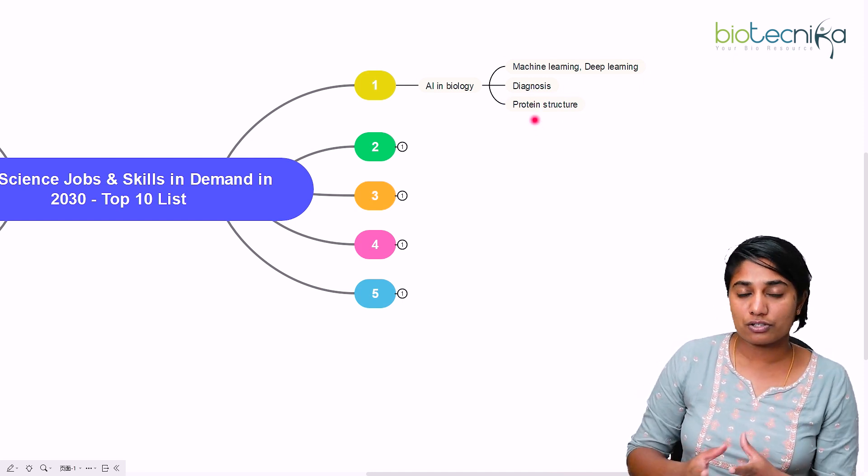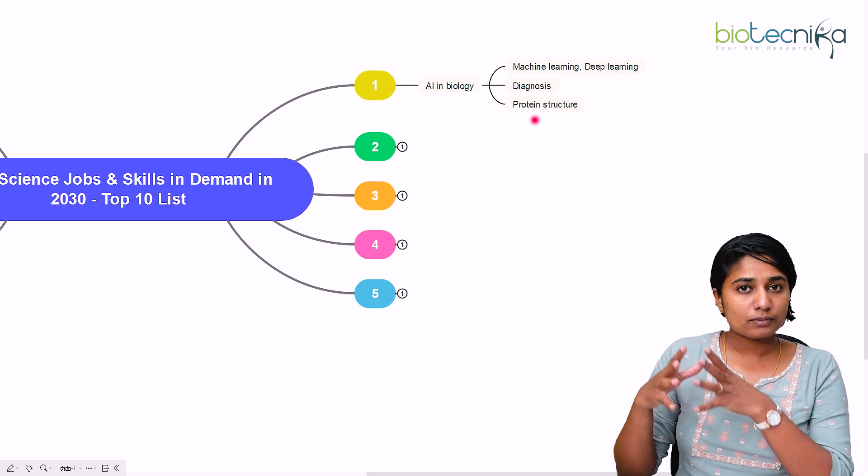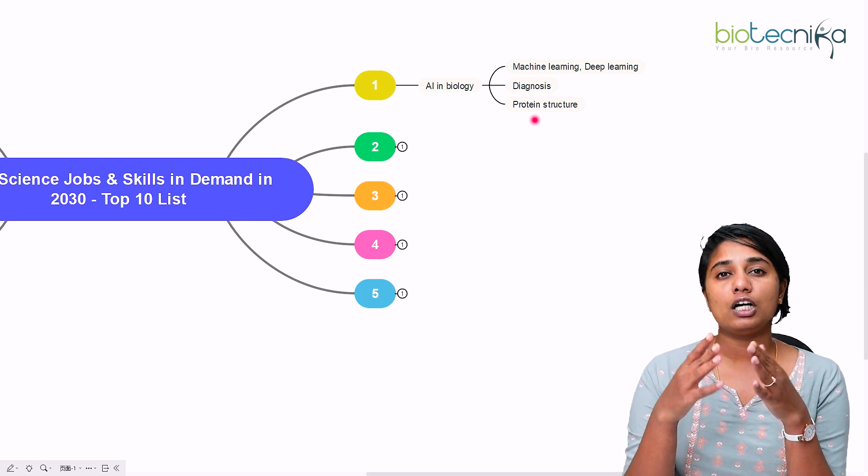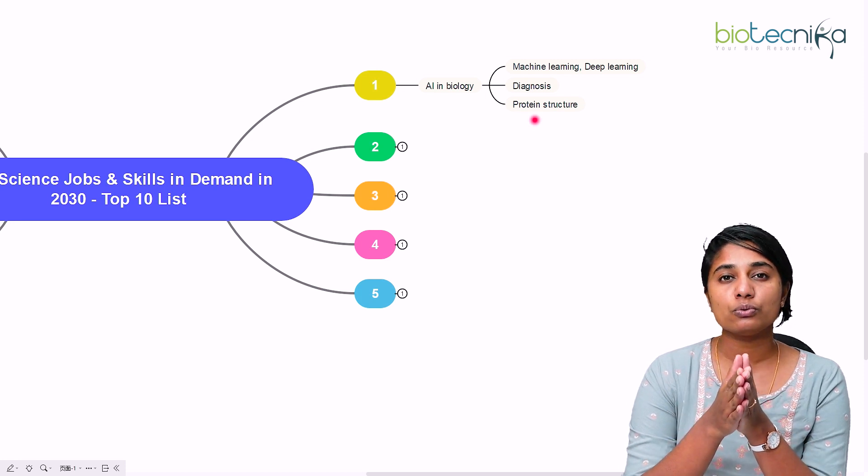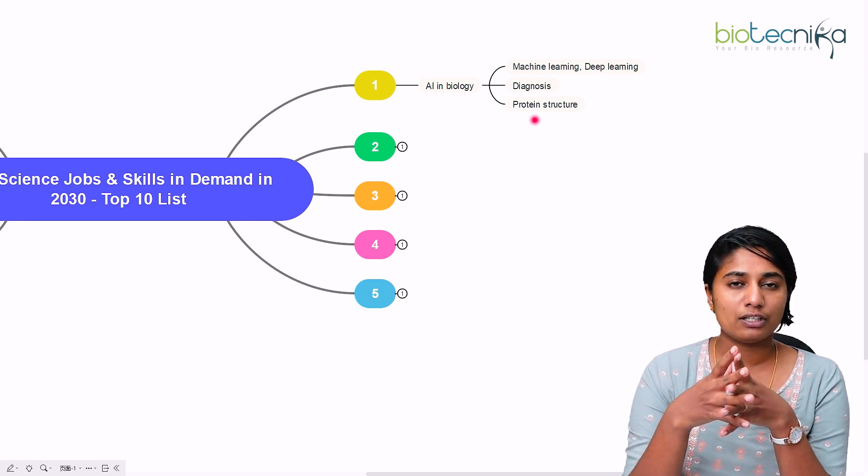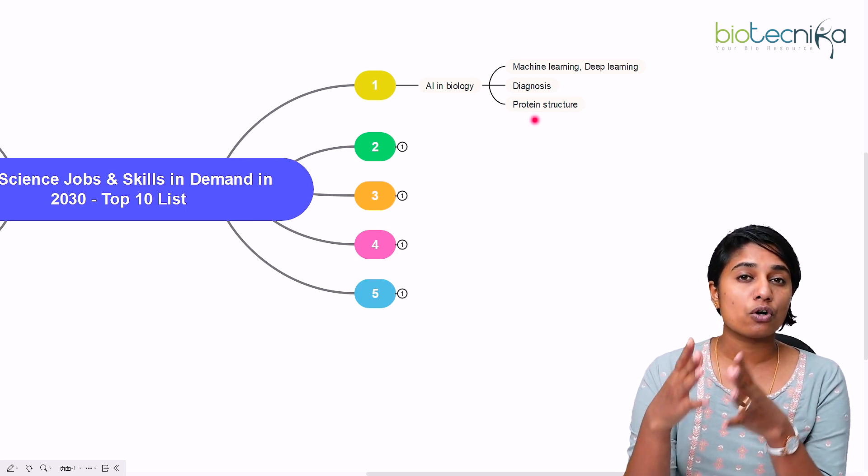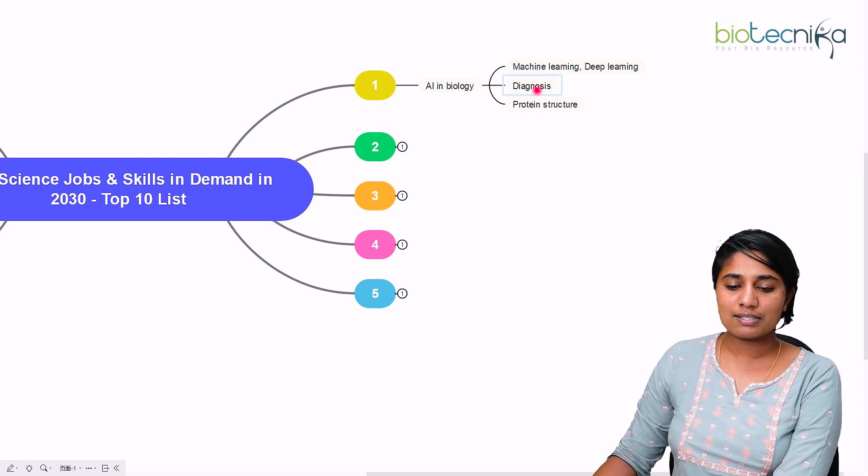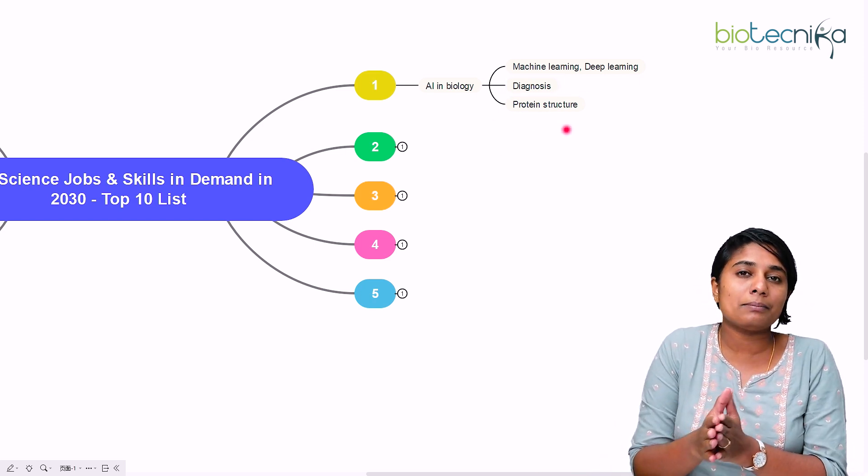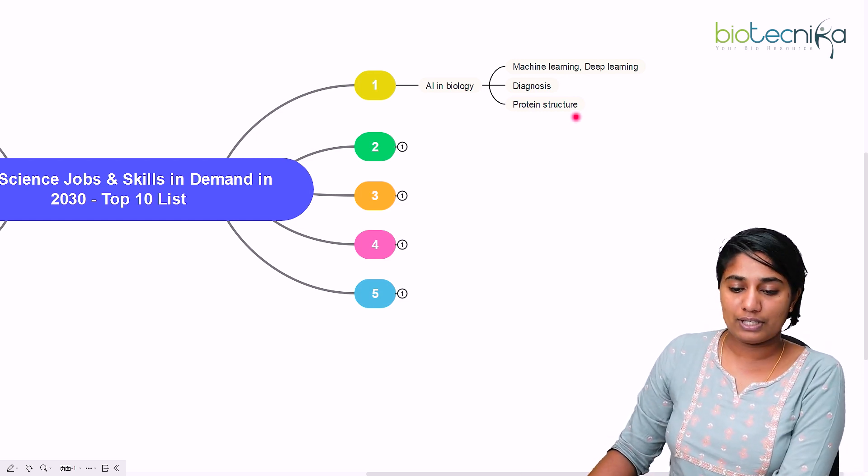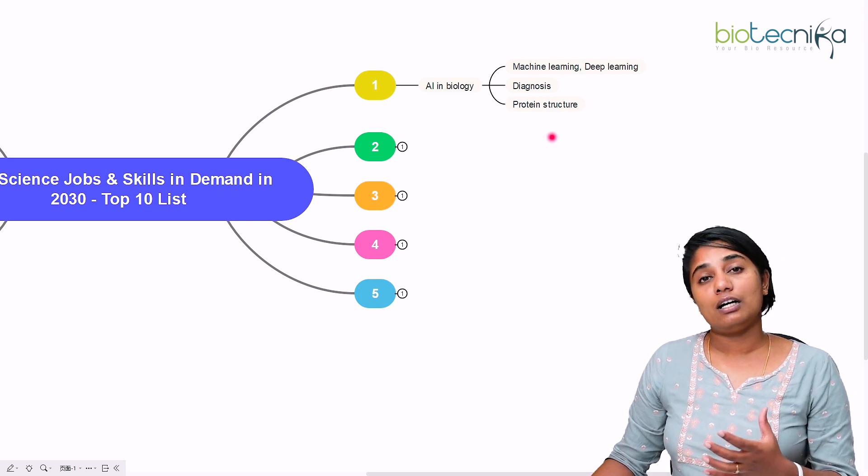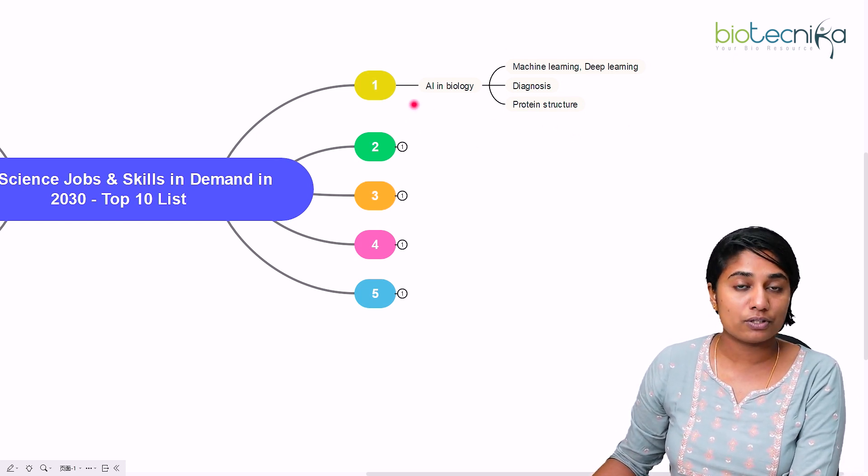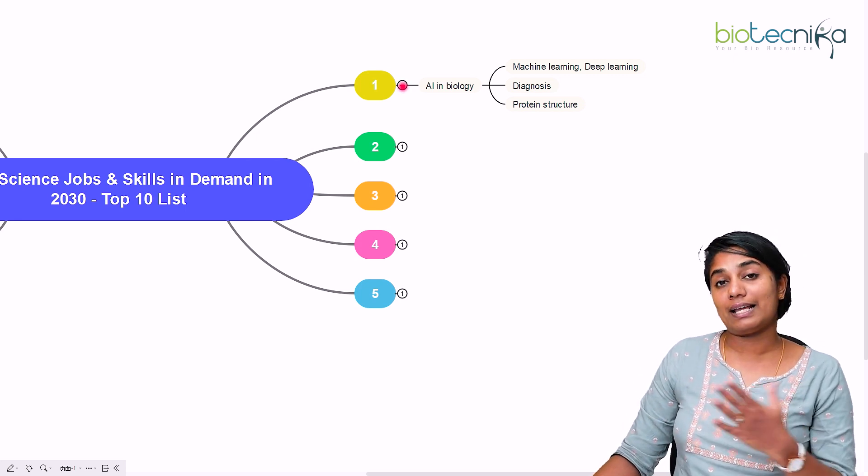Second is predicting the protein structure. For a researcher or even industrialist, predicting a protein structure is difficult. The traditional way of determining the protein structure is through very tedious ways like NMR crystallography. That is very tedious, more cost involvement, etc. But AI can help in predicting the protein structure very easily. Although it could just be a prediction, it will help in eliminating a lot of other unwanted variables in the research. So this is just a gist about why AI is important and why it will boom in the next 10 years.